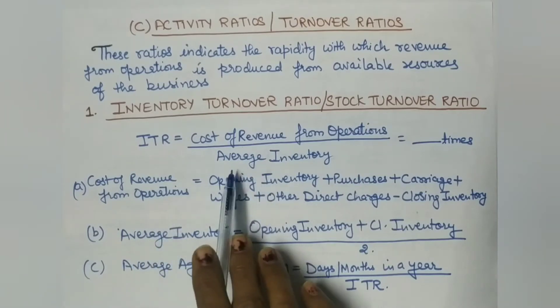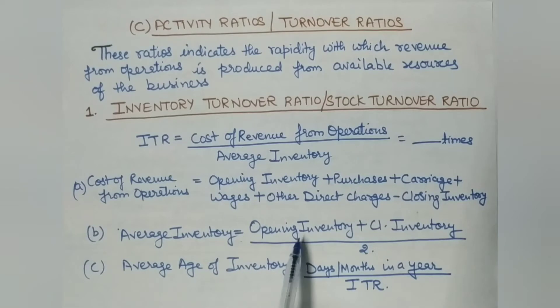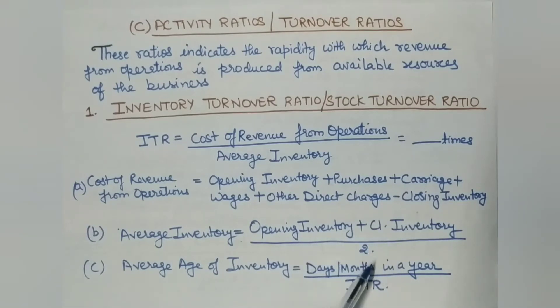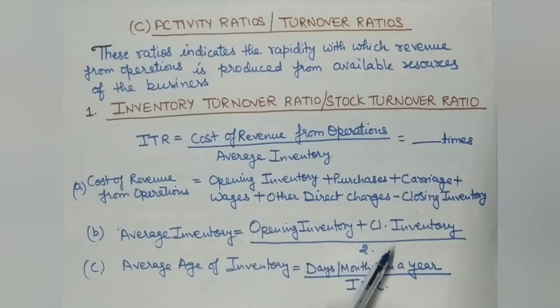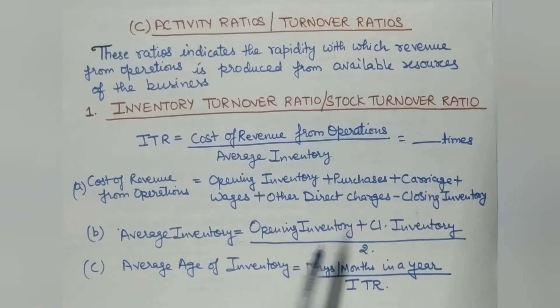What we need here is average inventory. Average inventory equals opening stock plus closing stock, divided by 2. So the average of opening and closing inventory is taken as the denominator in the inventory turnover ratio formula.